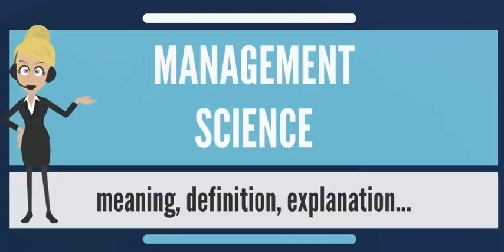Another area is designing and developing new and better models of organizational excellence. Management science research can be done on three levels. The fundamental level lies in three mathematical disciplines: probability, optimization, and dynamical systems theory.